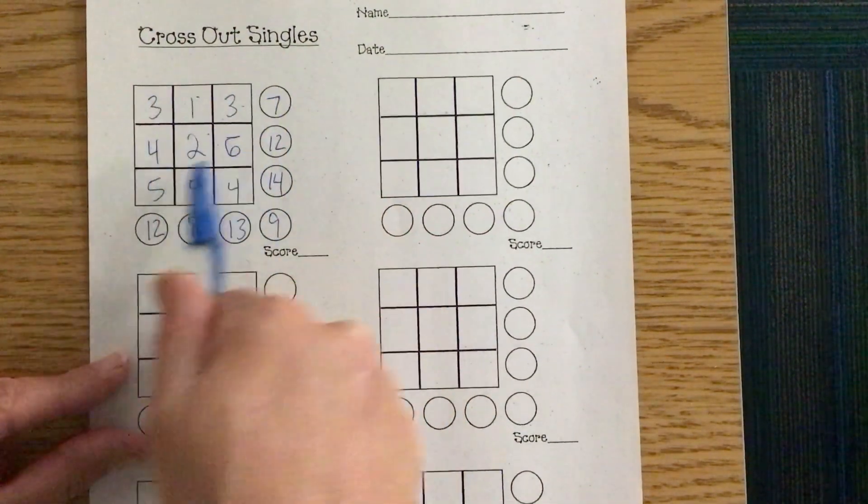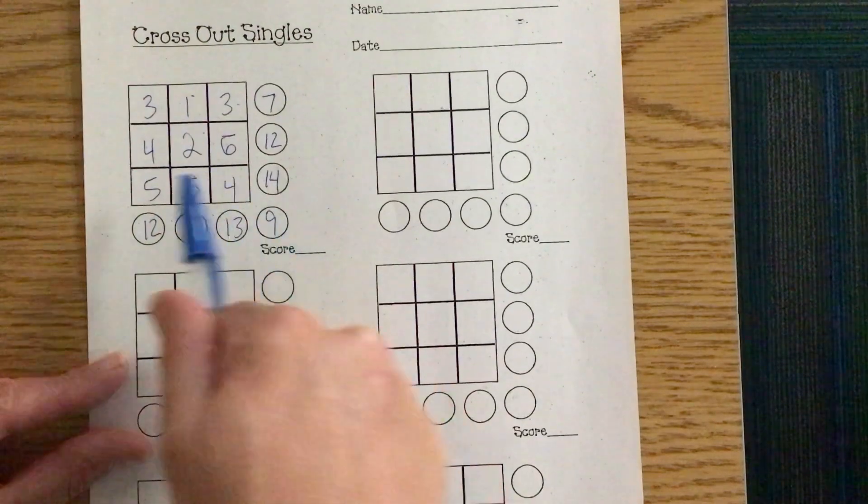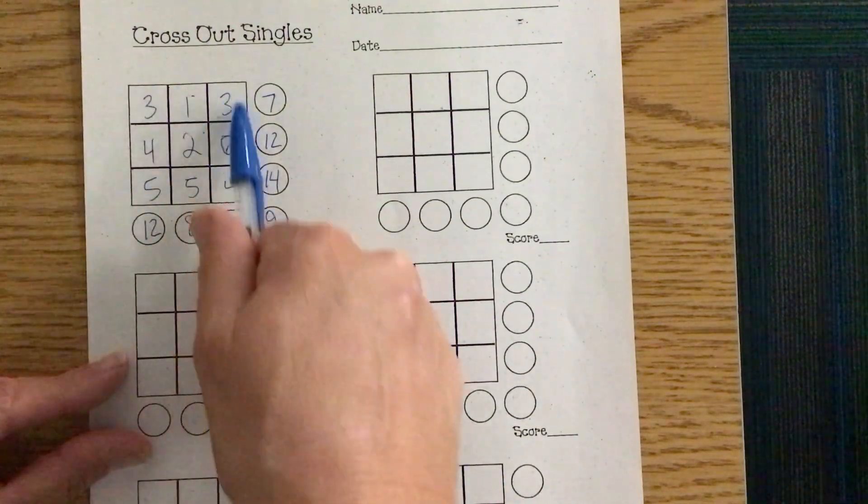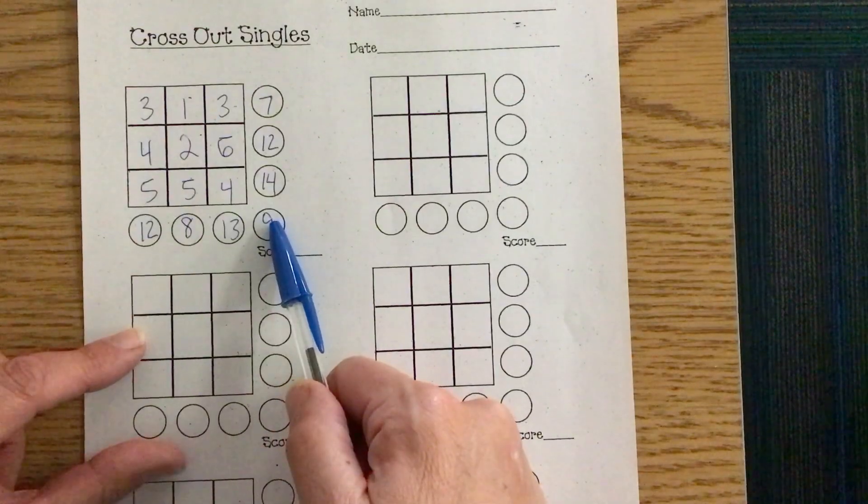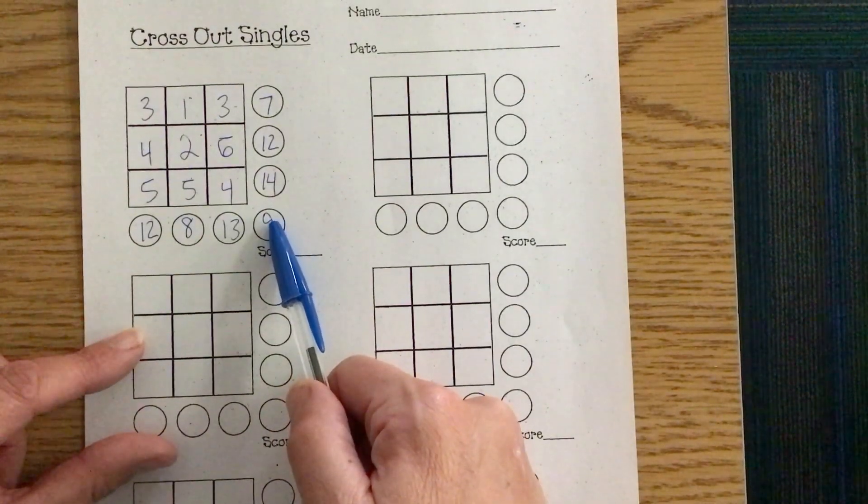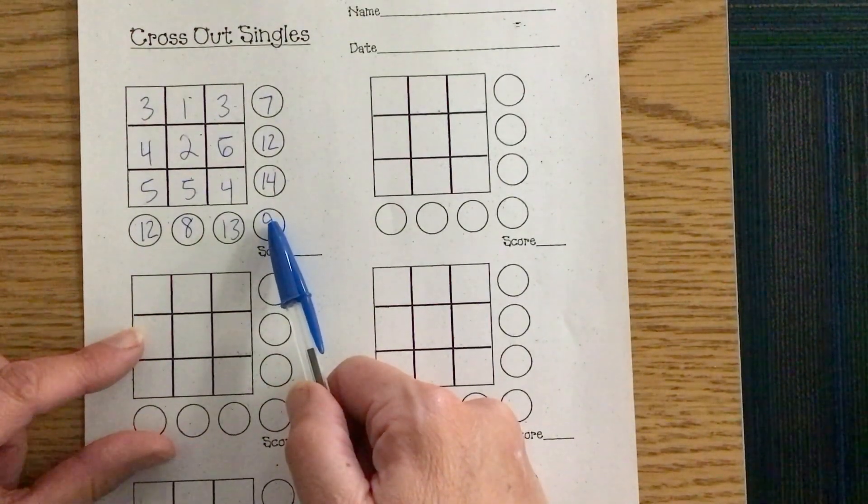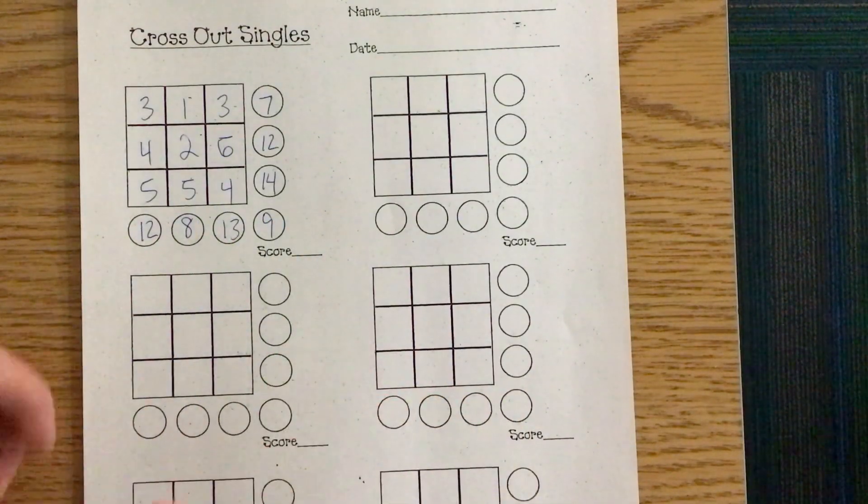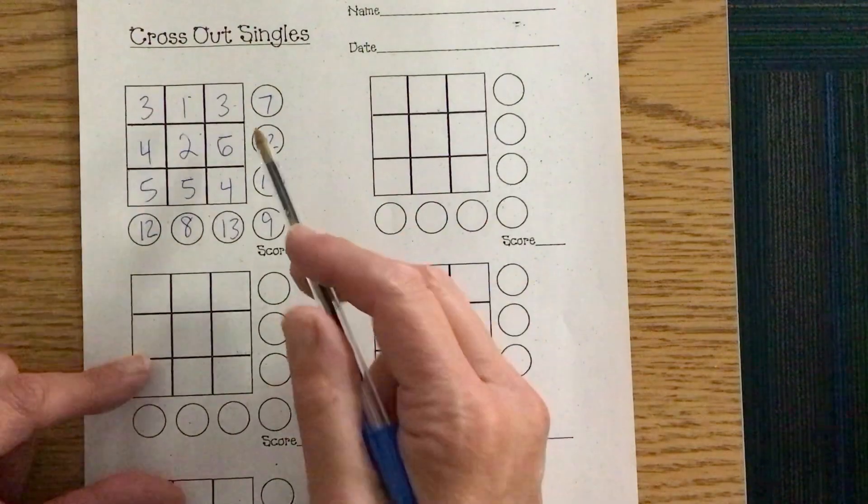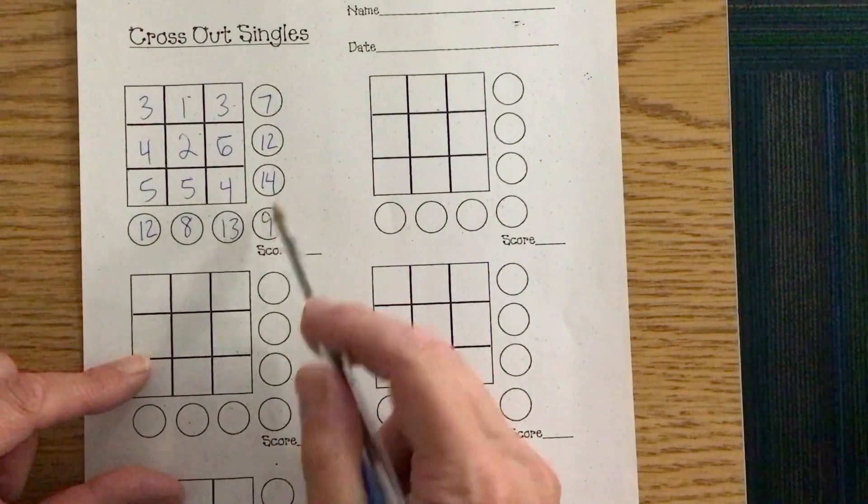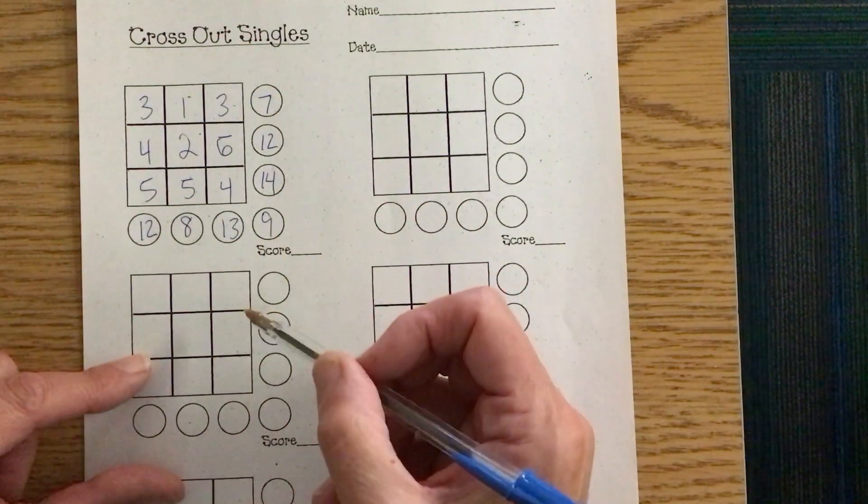So add across, add diagonal, and add the columns going down. To score this, you can only keep the numbers that have a double or triple, so they have more than one single number. The name of the game is Cross Out Singles. So if it's only a single number, it only happens once in these circles, you've got to cross it off.